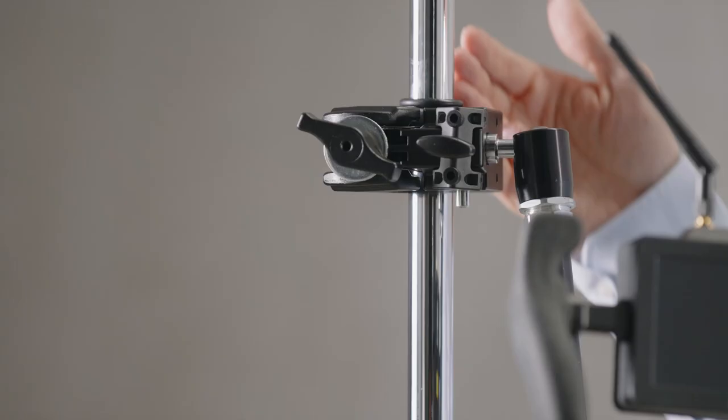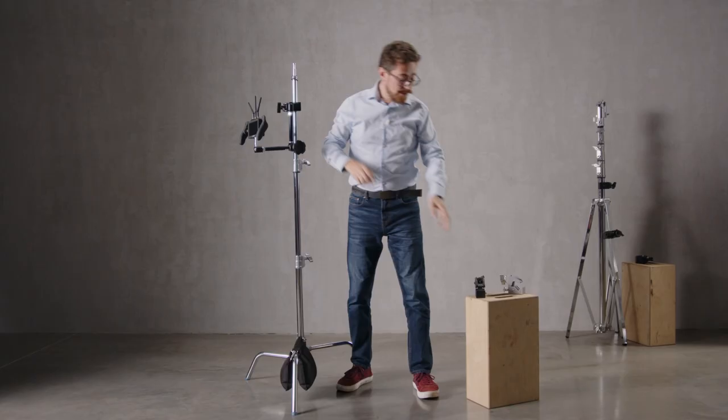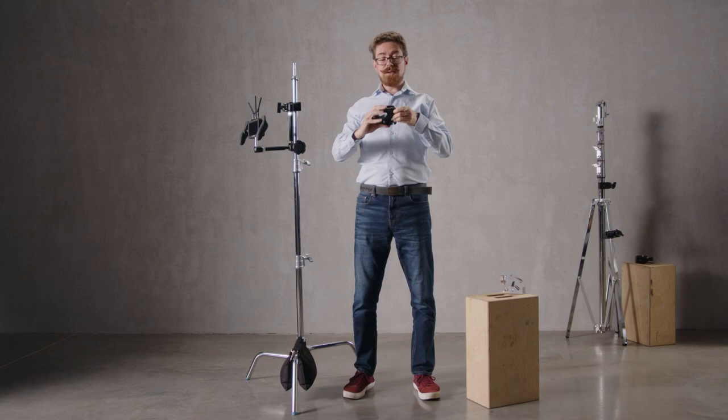We can clamp this onto any tubular section with a diameter of 13 to 55 millimeters, which covers a very broad range. Looking at the clamp to my left, you can see it's spring loaded, so you can adjust it to the diameter you want and then quickly spin it shut. It's quite quick and easy to operate.